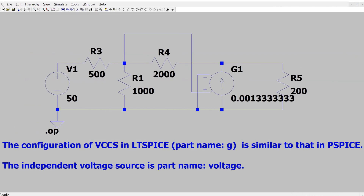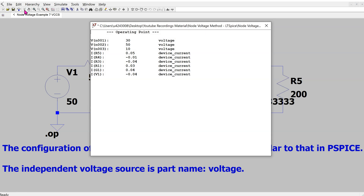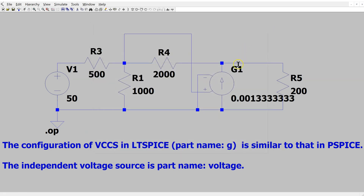We can use either PSPICE or LTSPICE to confirm our answer. In this case I'm using LTSPICE. The voltage controlled current source is available as part name G, and it is straightforward to configure. Running the simulation and hovering the cursor over the dependent source, LTSPICE reports a power dissipation of minus 400 milliwatts, which equals minus 0.4 watts as calculated, and the node voltages are 30 volts and 10 volts, confirming the solution.